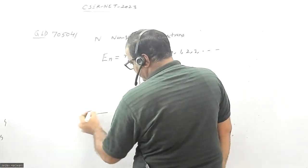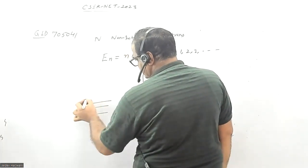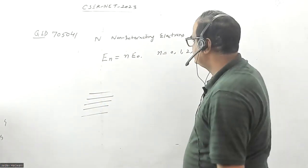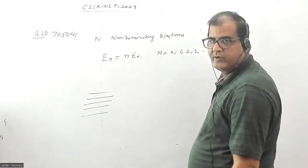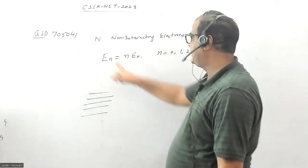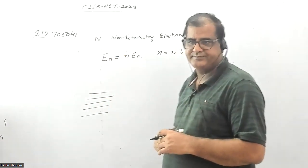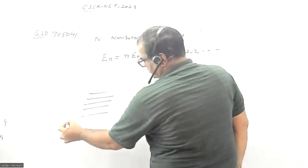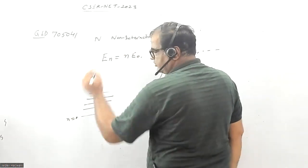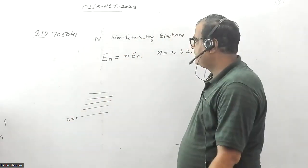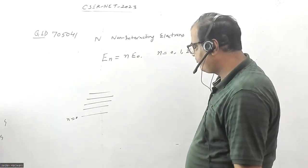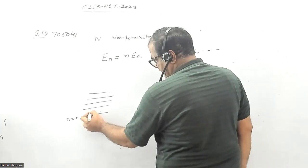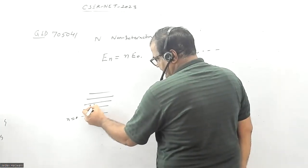If I have to fill N electrons, I need at least N by 2 levels. For example, if N equals 100 and I'm filling from n equals 0, I have to go up to n equals 99. But because they are fermions, we can fill up to two electrons in one level.